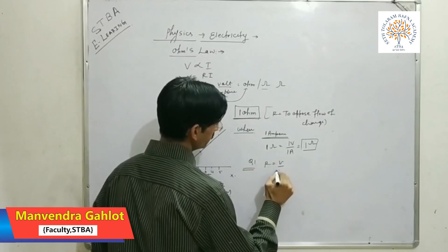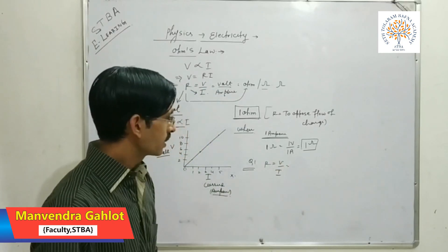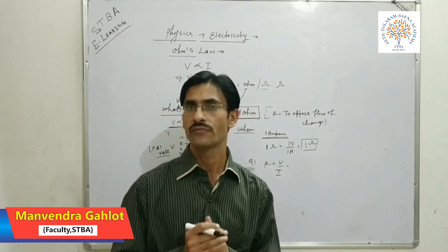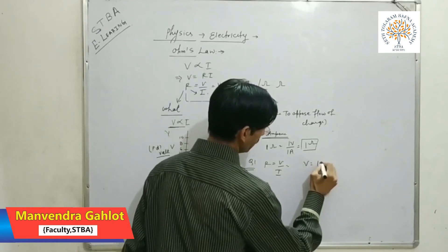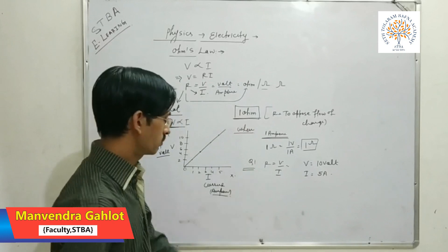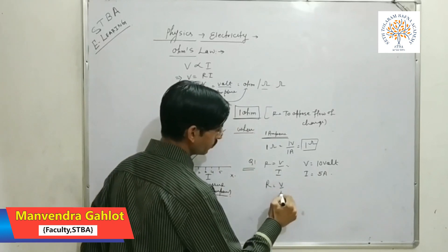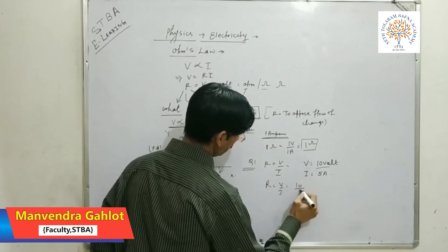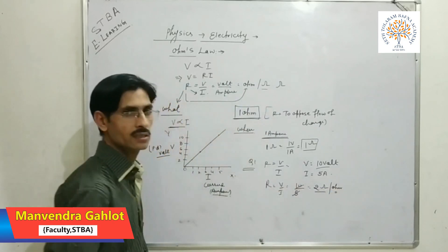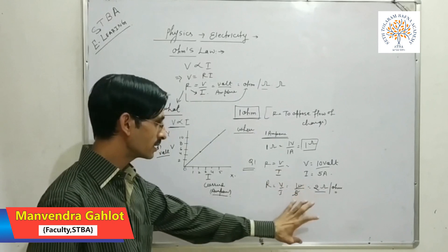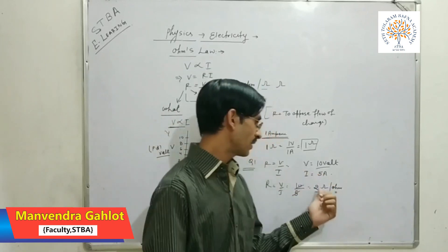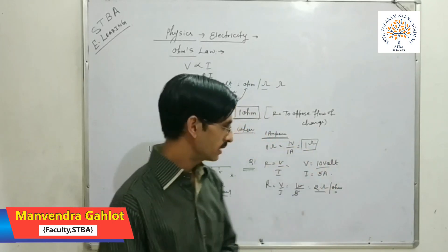R equals V upon I. For example, suppose 5 ampere current flows in a circuit and the potential difference across the wire is 10 volts. So V equals 10 volt, I equals 5 ampere. What is the resistance? R equals V upon I equals 10 upon 5, which means 2 Ohm. That type of numerical will appear in the exam.